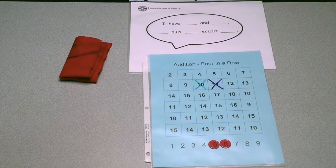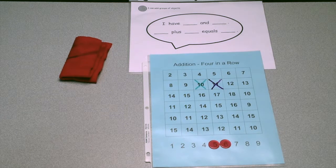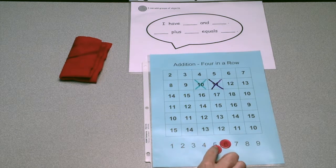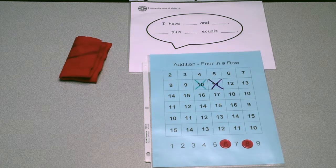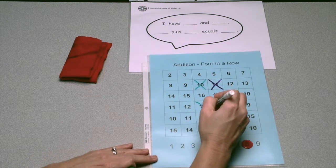So I'm going to decide to choose 14. So I move the game piece from 5 to 8. Use my speech bubble. I have 6 and 8. 6 plus 8 equals 14. And I X off that number.